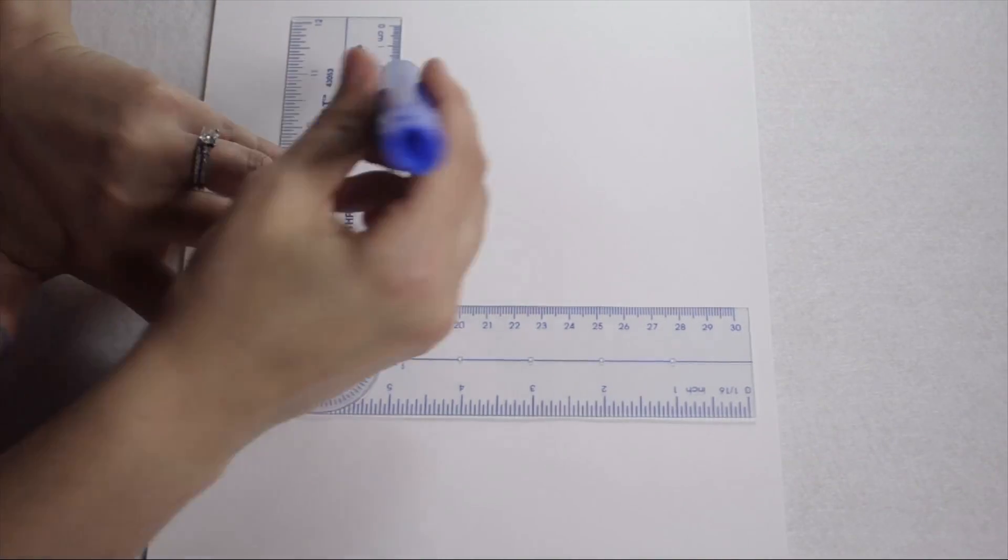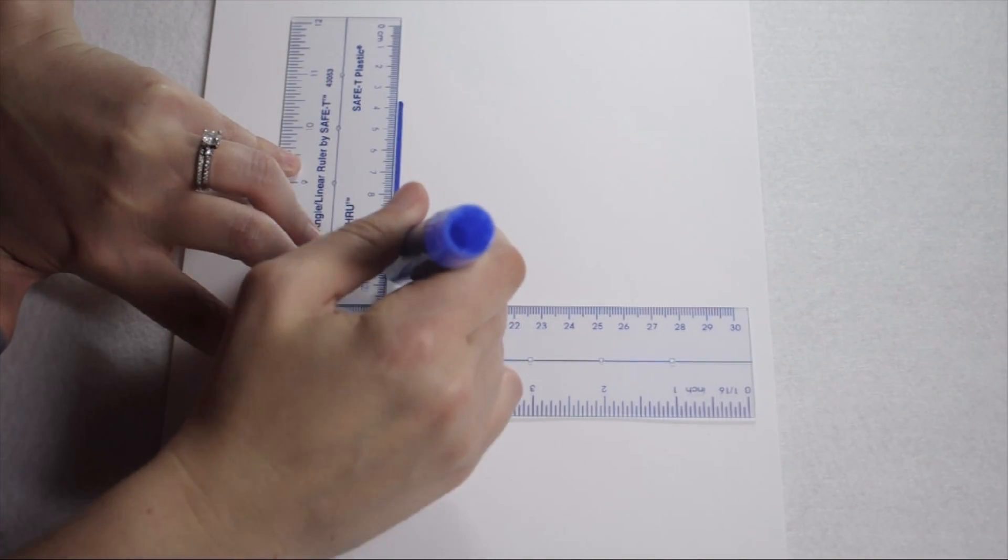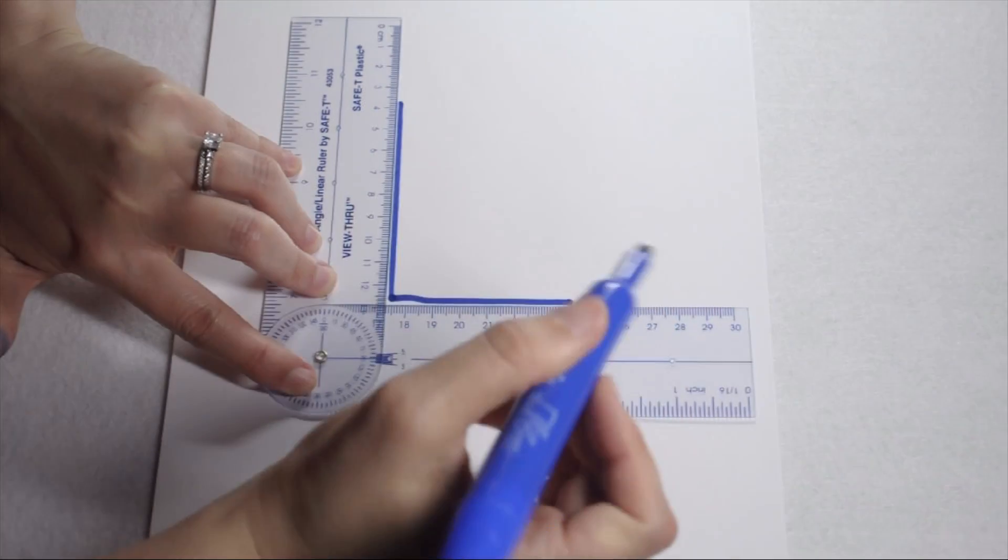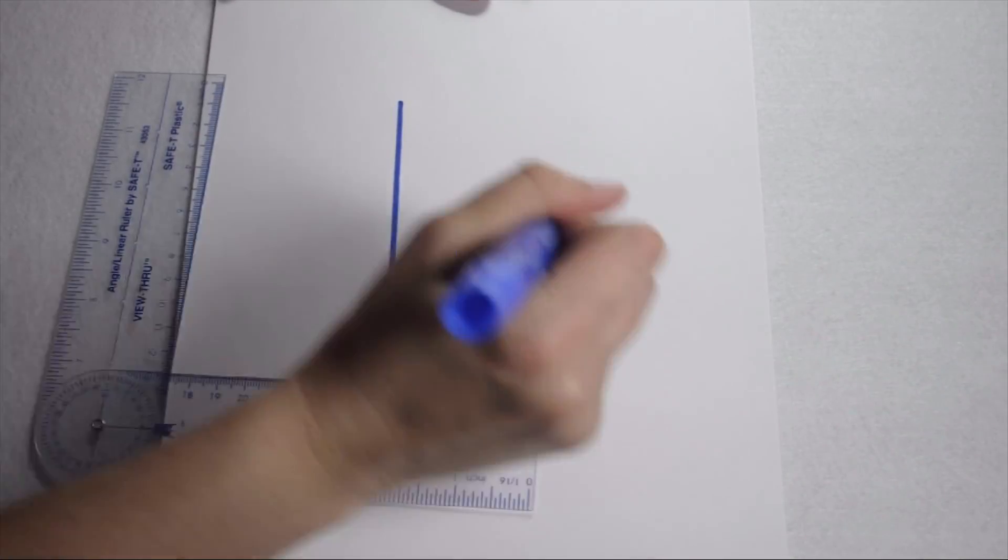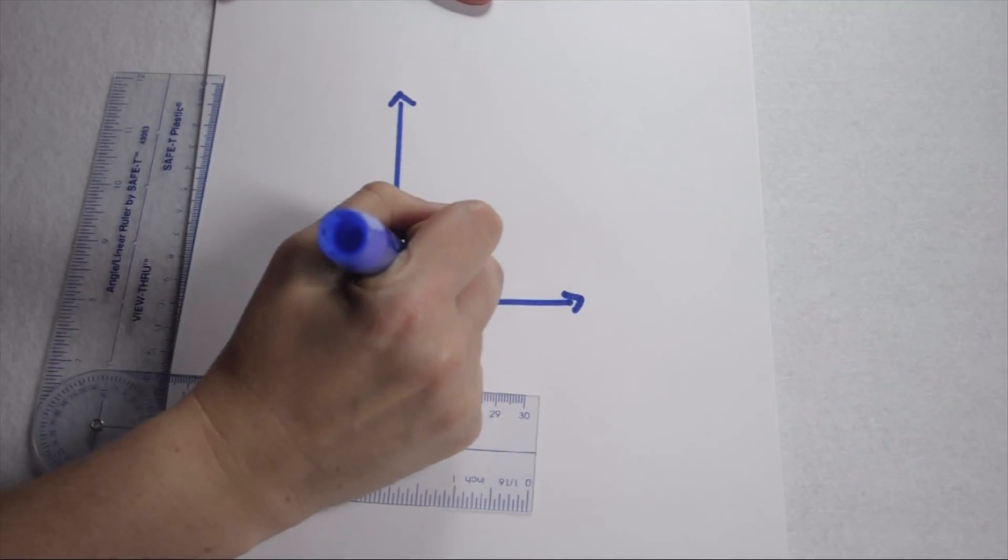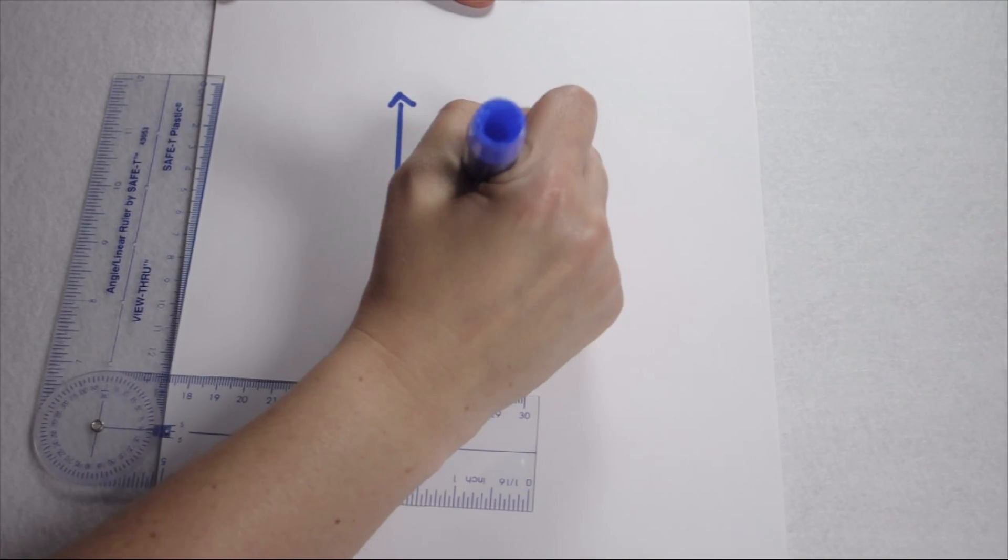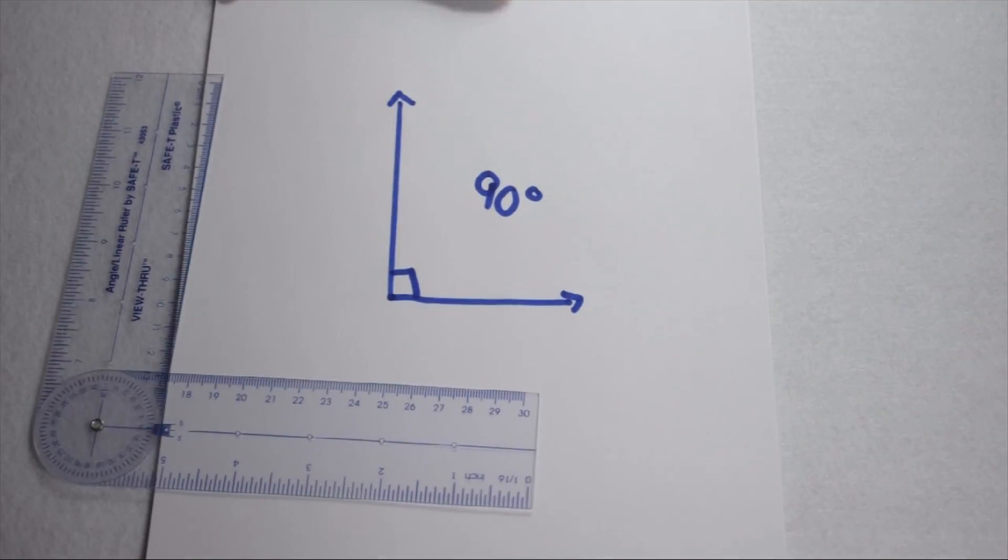To simply draw the angle, I can just hold it in place and trace on the inside of both legs. When I do, I can add my little box in the corner to show that it's a 90 degree angle and I have my angle.